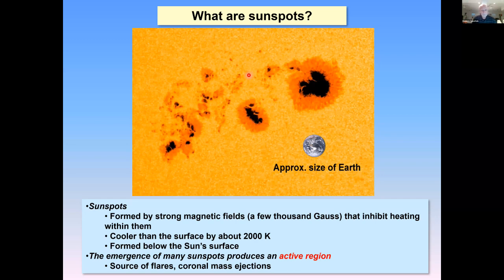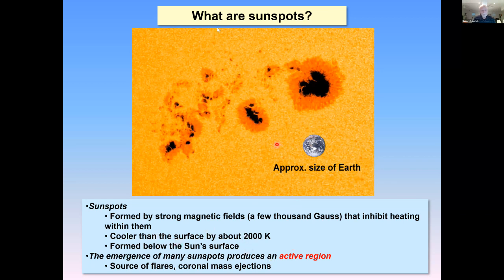Now, what about the sunspots themselves? Sunspots are formed by strong magnetic fields — a few thousand gauss — that inhibit heating from within them. They're cooler than the surface by about 2,000 degrees. The heat flowing out from the core of the sun can't flow through the strong magnetic fields very easily, so it gets thrown around them, creating the penumbra and a cooler area of the sun. If you took this area out into space, it would be bright because it's only 2,000 degrees cooler than the surface. When you have many of these with very strong field lines — several thousand gauss — you call it an active region. This is where all the disturbances in the sun occur that make up space weather — it's a source of flares and coronal mass ejections.